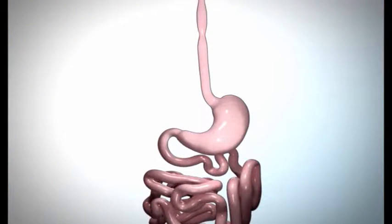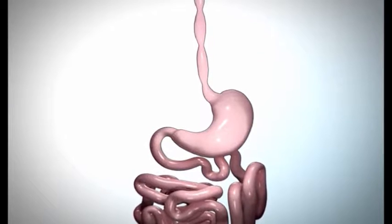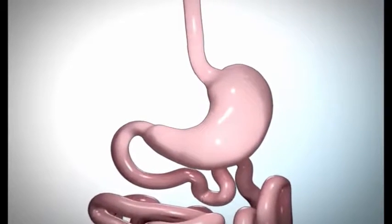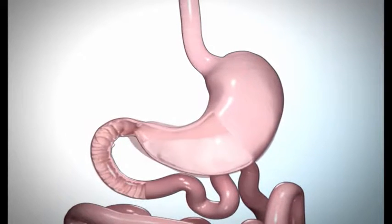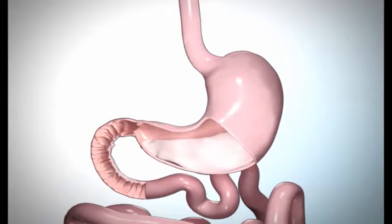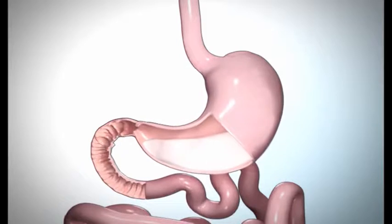This educational video will explain the normal process of digestion, the Roux-en-Y gastric bypass procedure, and how weight loss will occur upon completion of the surgery. Currently, your stomach can hold about 40 ounces of food. Once in your stomach, the food combines with digestive juices containing acids and enzymes that help break it down into smaller particles.